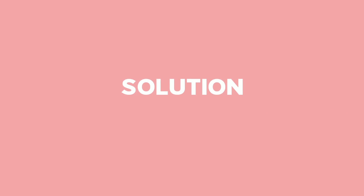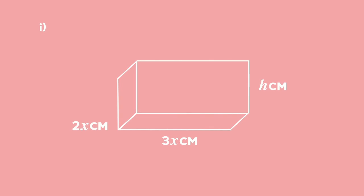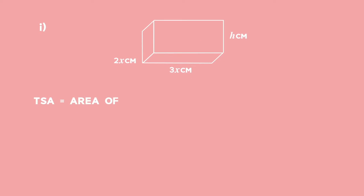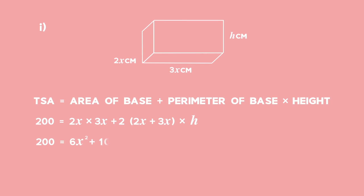Solution 1: Total surface area equals the area of the base plus the product of the perimeter of the base and the height. 200 = 2x × 3x + 2(2x + 3x) × h. This simplifies to 200 = 6x² + 10xh.